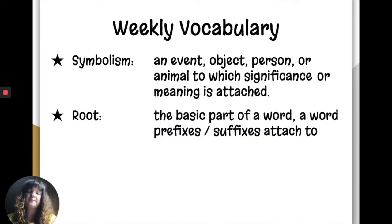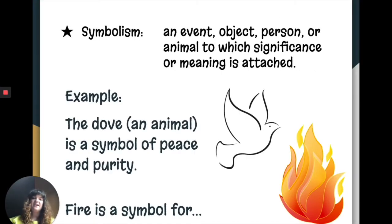The weekly vocabulary that we're focusing on today is symbolism and word roots. Symbolism is an event, object, person, or animal to which significance or meaning is attached. The example from yesterday was that there is a dove that can be a symbol of peace linked back to illusions in the Bible. Similarly, fire can be linked to either passion and love or anger and destruction depending on how you construe that and what cultural connections that you're making.